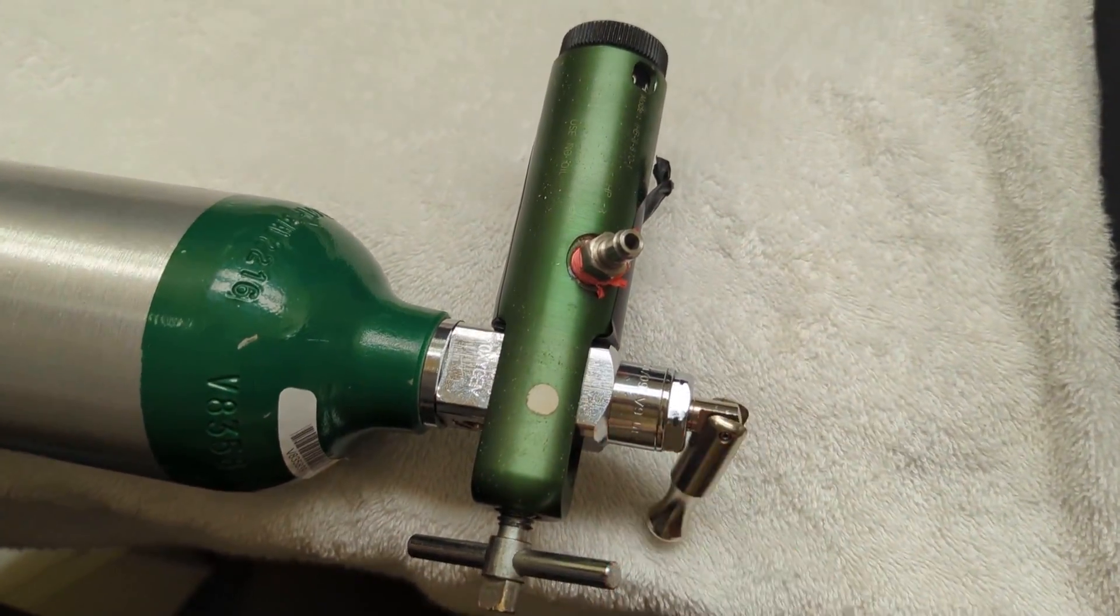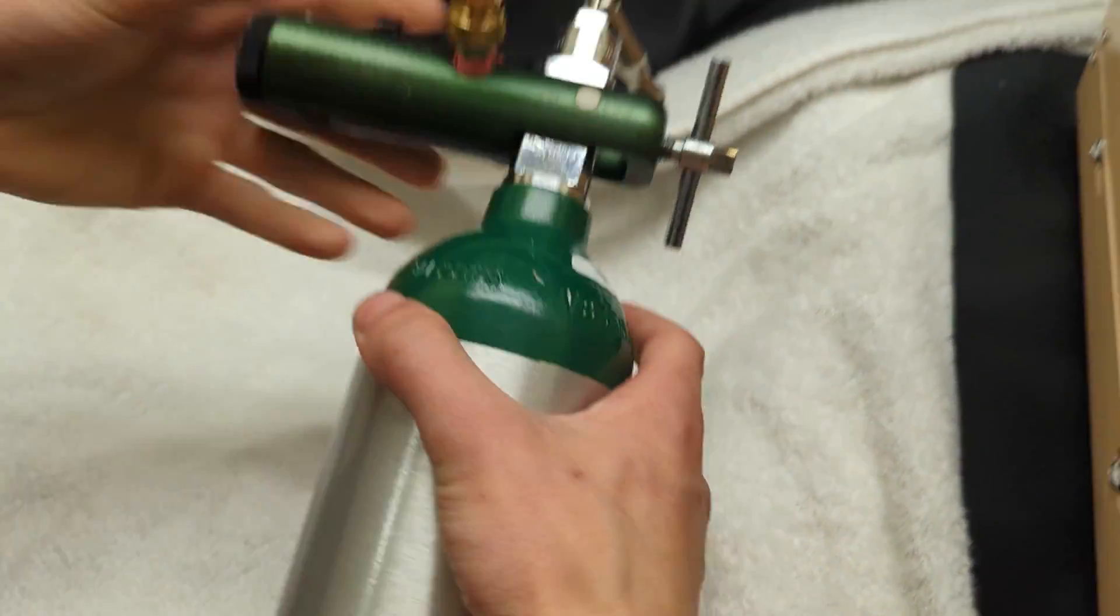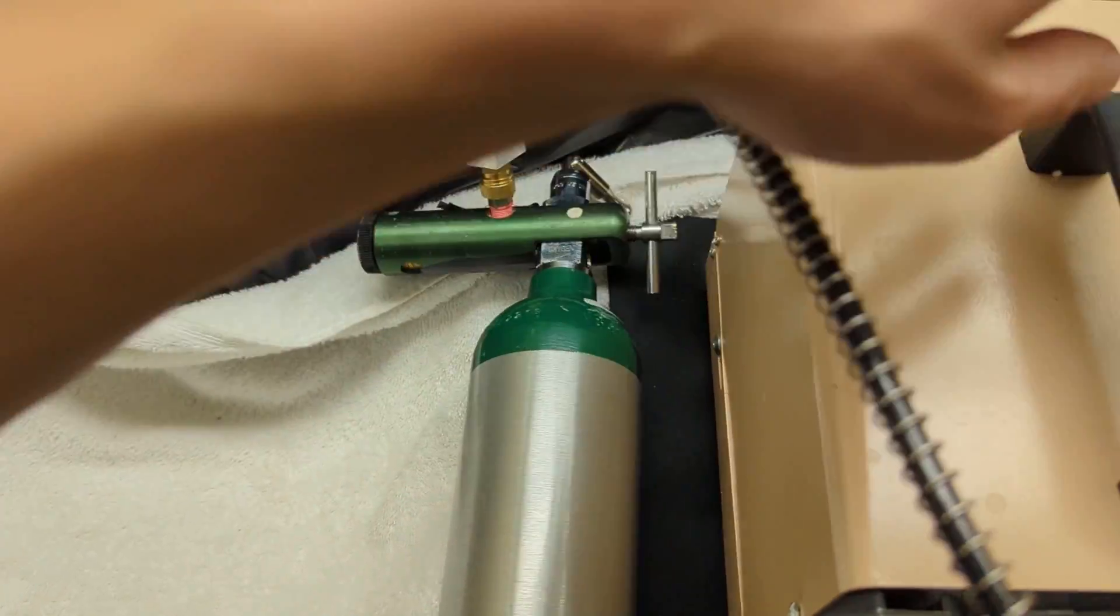Alright, now I'm going to open the valve completely and I'm going to attach the quick connect. Now we can just leave our oxygen cylinder right here and turn on the machine.